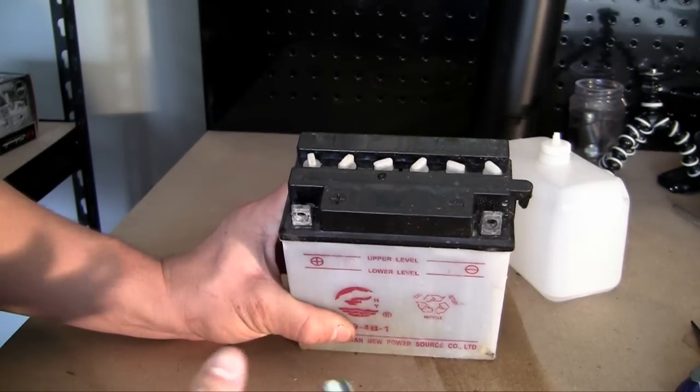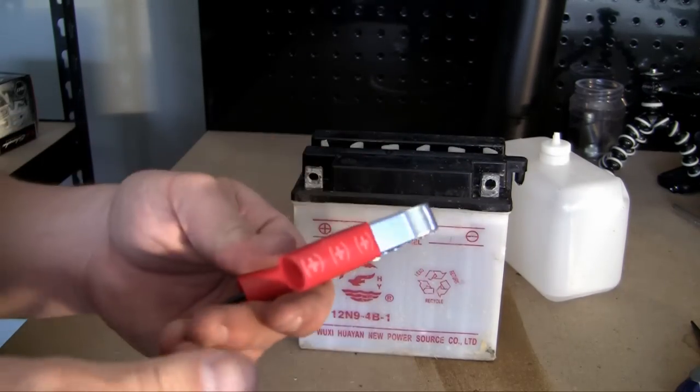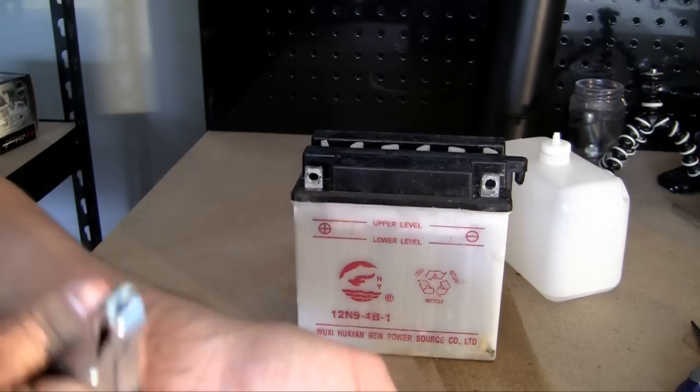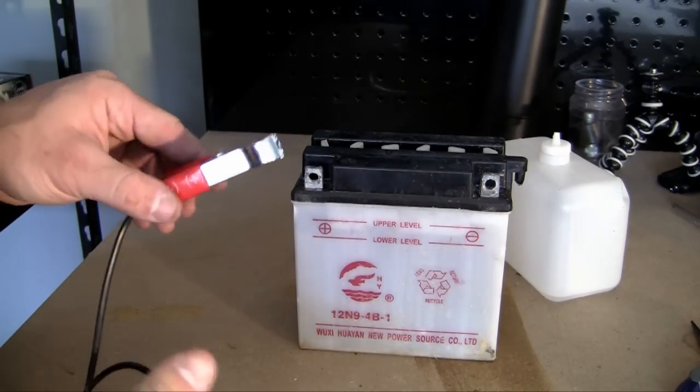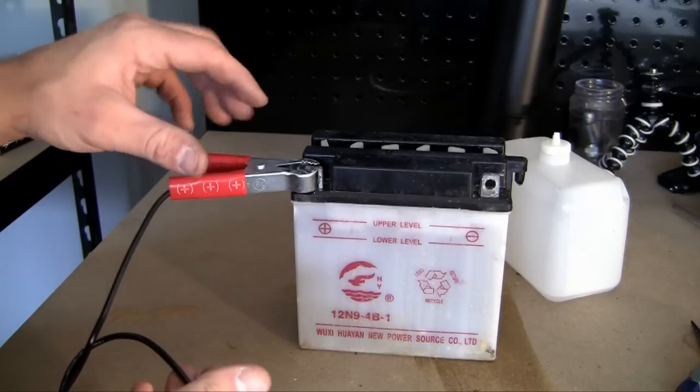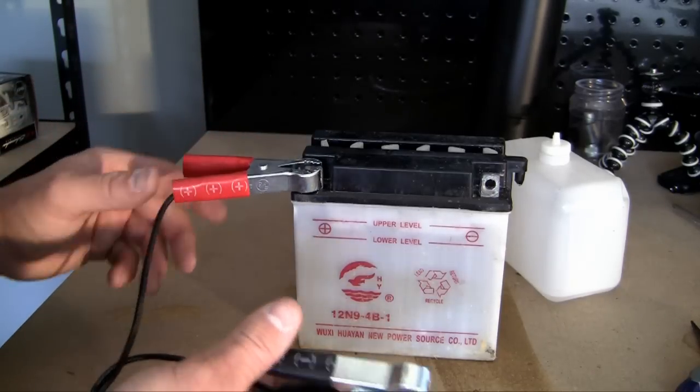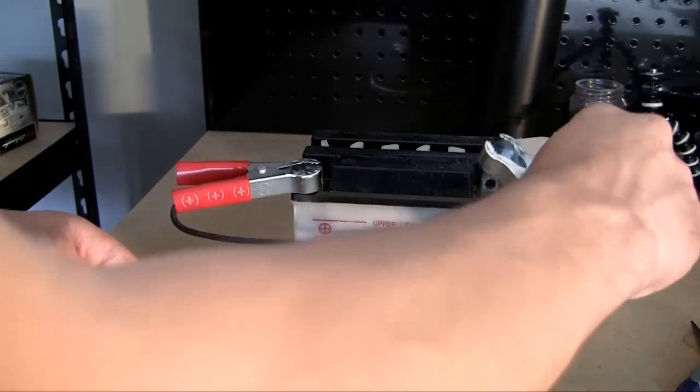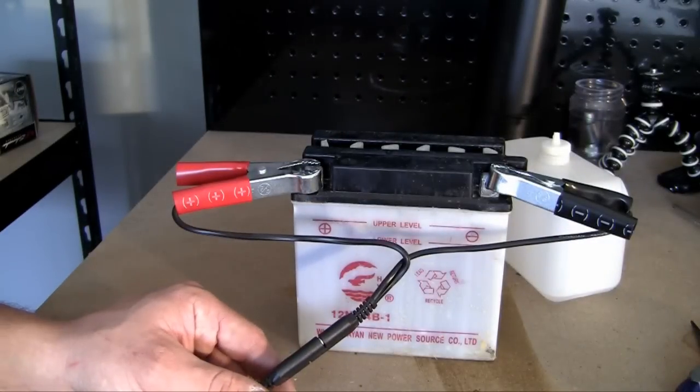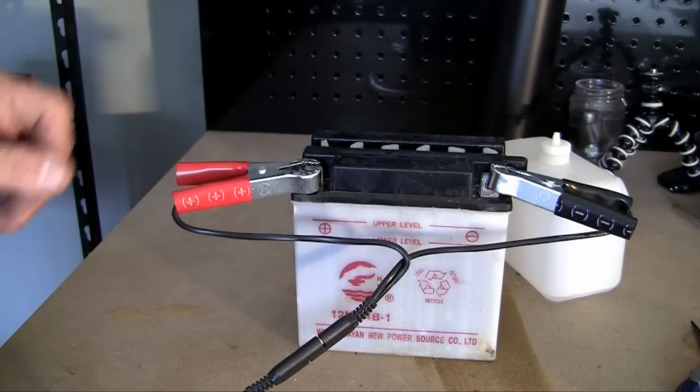Now, the industry standard is red is positive and black is negative, but sometimes people mix the colors up or switch around battery terminals. So just for industry standard, red goes to your positive, and you always want to connect the red to the positive first. Now go ahead and connect the black to your negative, and now you can turn on your charger, wait about five or six hours, and then this battery is going to be charged.